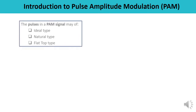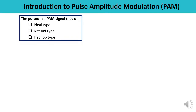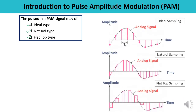Now let us understand the different types of sampling. The pulses in a PAM signal may be of any one type: it may be an ideal type, a natural type, or a flat top type. Among these three, flat top sampling is very popular and commonly used. Let us see with the help of a diagram.